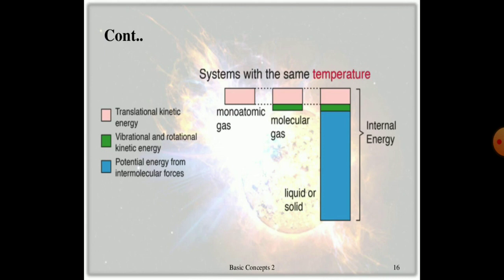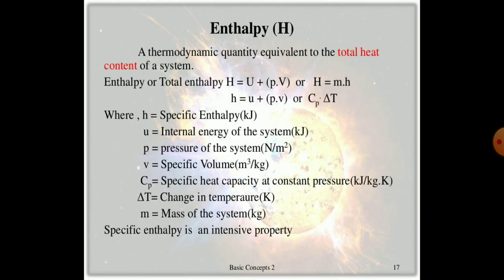Internal energy is possessed in each and every gas particle. Enthalpy is a thermodynamic quantity equivalent to the total heat content of the system. Total enthalpy is denoted by H, which is the sum of internal energy and the product of pressure and volume (H = U + PV). Specific enthalpy is H, internal energy is U, pressure is P, specific volume is V, specific heat capacity is Cp, change in temperature in Kelvin is delta T, and mass is denoted by small m.